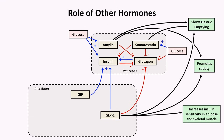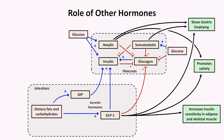GLP-1 is secreted by the L cells of the ileum and colon. GIP and GLP-1 are known collectively as incretin hormones, or incretins for short. Incretins are hormones produced by the intestines which influence blood glucose without affecting the pancreas' exocrine function. Their existence was discovered after it was observed that study subjects secreted more insulin in response to orally delivered nutrients than to an equivalent amount of intravenously delivered nutrients. Thus, the stimulus for their release is dietary fats and carbohydrates. One last clinically relevant detail is that GIP and GLP-1 are both rapidly inactivated by an enzyme called DPP-4, which stands for dipeptidyl peptidase. This is relevant because DPP-4 makes for an interesting drug target, which will be discussed in a future video on diabetic medications.